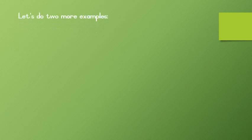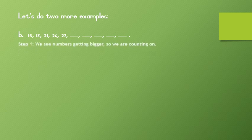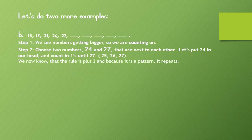Let's do two more examples of number patterns. We have 15, 18, 21, 24, and 27. Step 1: We see numbers getting bigger so we are counting on. Step 2: Choose two numbers — 24 and 27 — that are next to each other. Let's put 24 in our head and count in ones until 27. We have 25, 26, and 27. We now know that the rule is plus 3, and because it is a pattern it repeats.